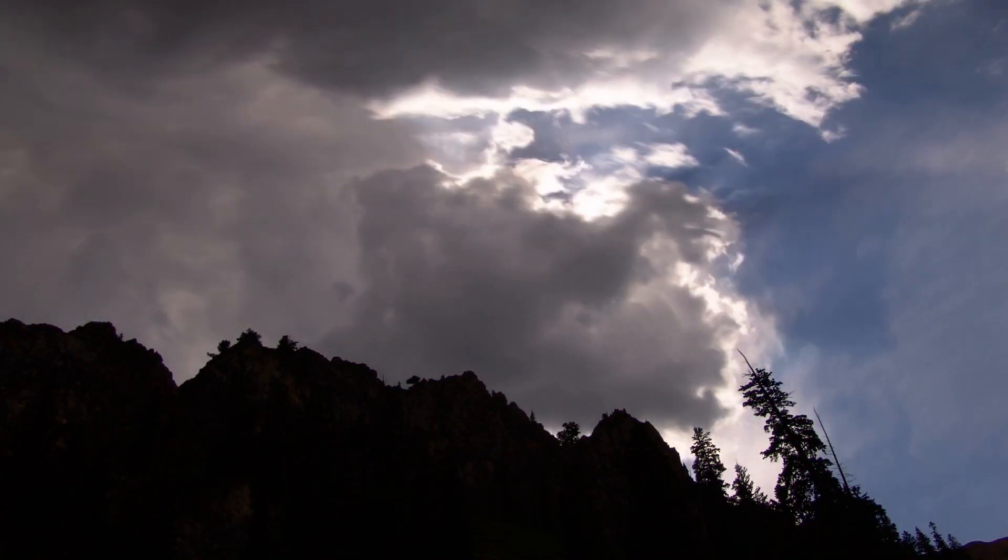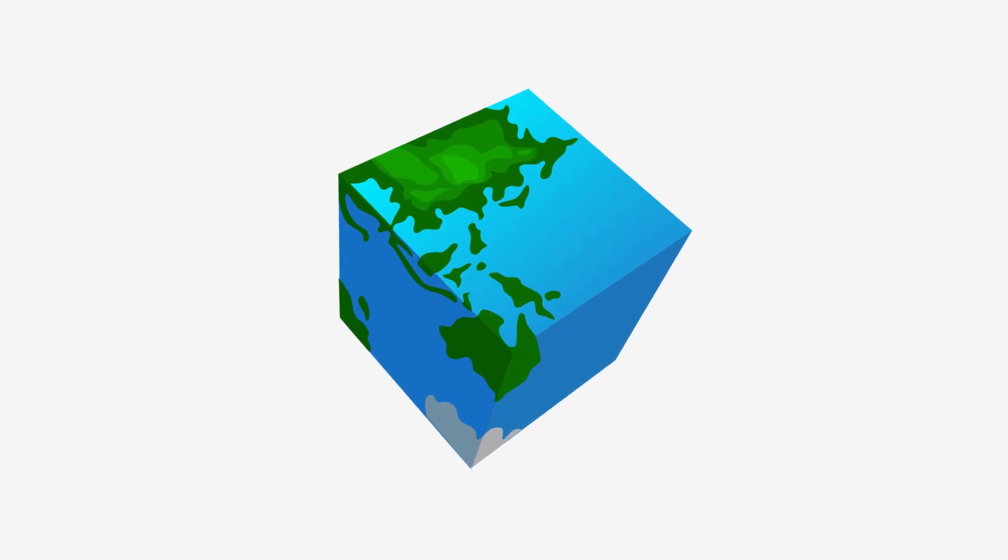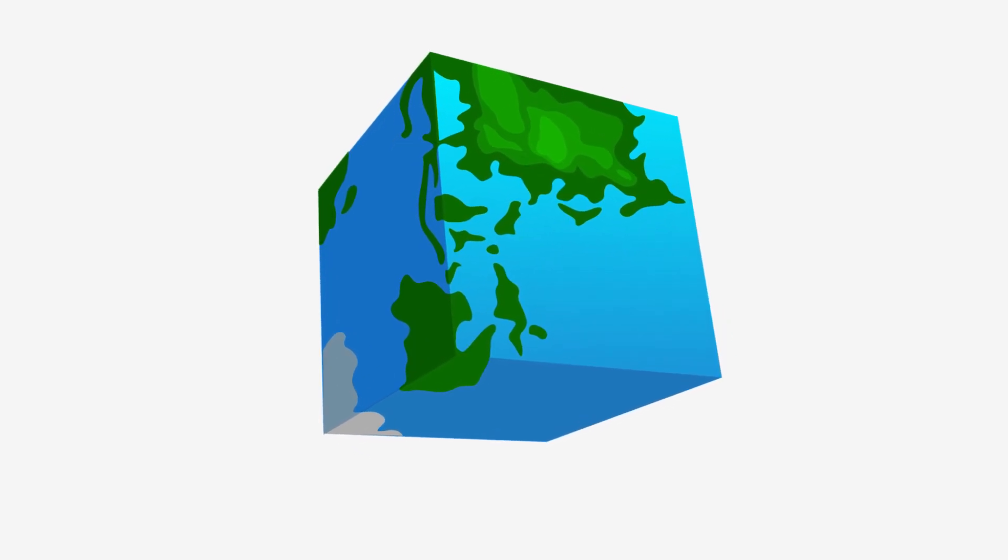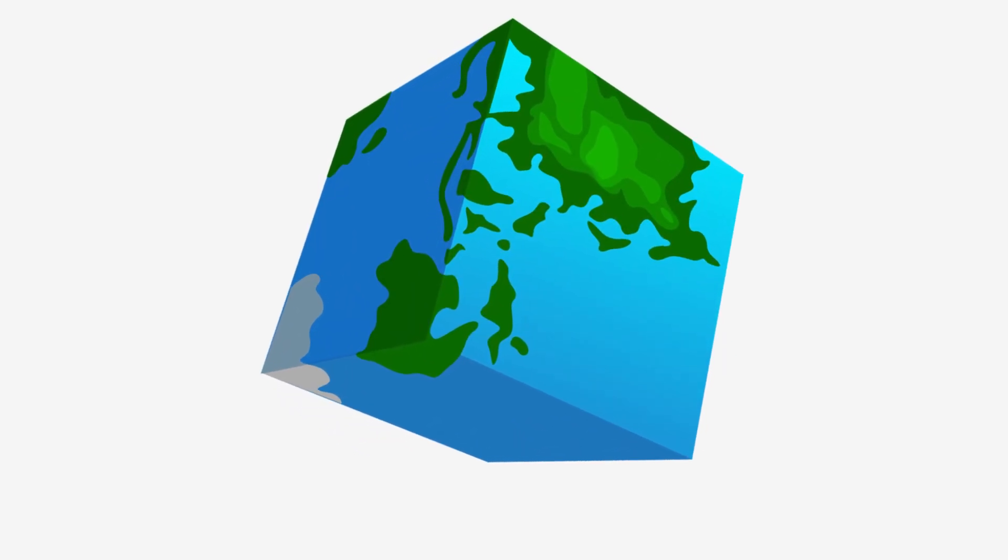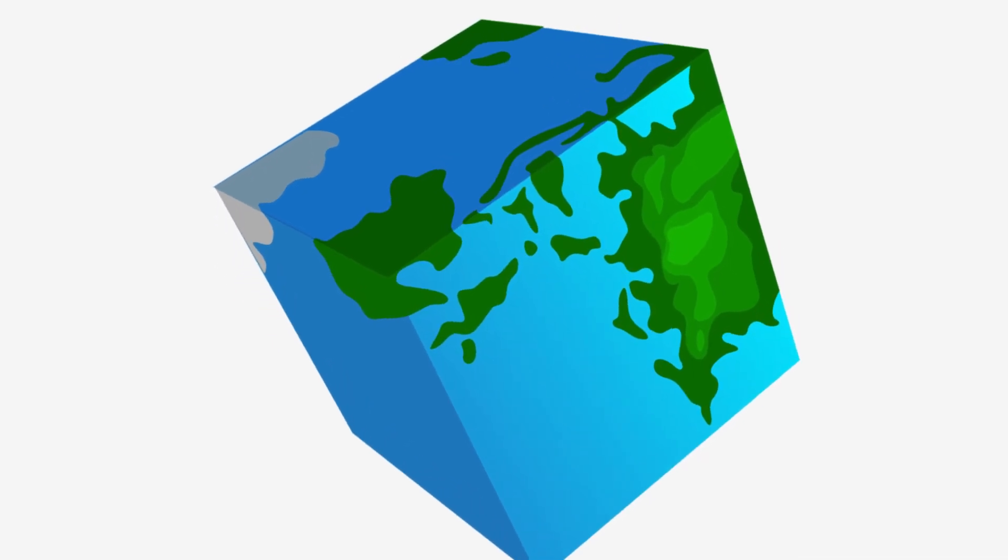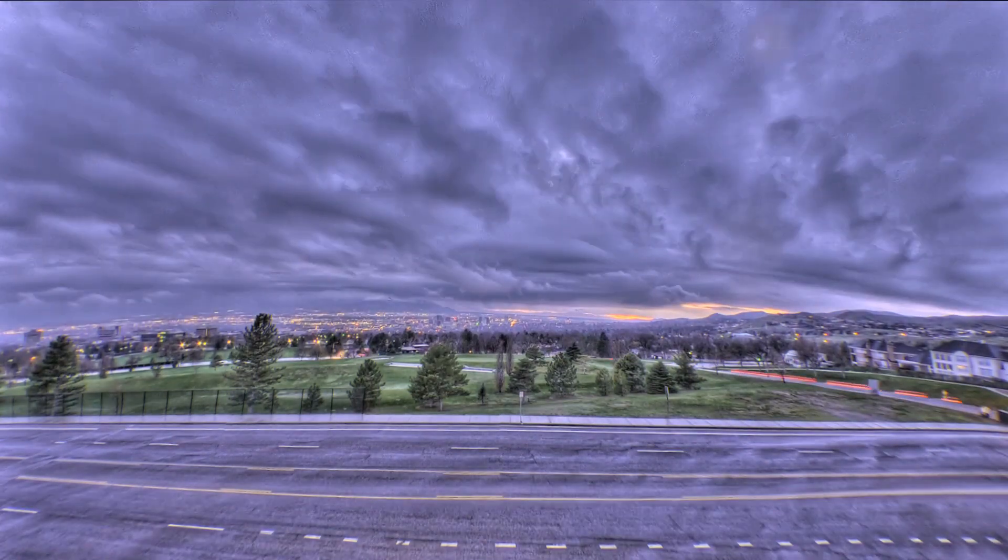Weather would be very different on a cubical earth, but it all depends on how the cube rotated on its axis. If the cube rotated through the faces so that the top and bottom were parallel, then the top of the cube and the bottom of the cube would have weather consistent to that of the poles, and each face of the cube would have weather consistent to that of weather at the equator. In this case, there wouldn't be many places on the cube that would have similar weather to that of North America or Europe.